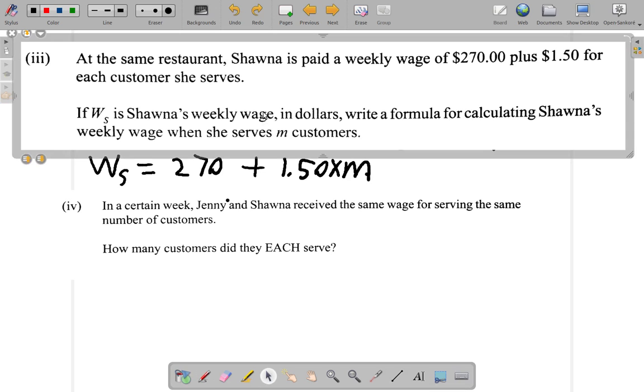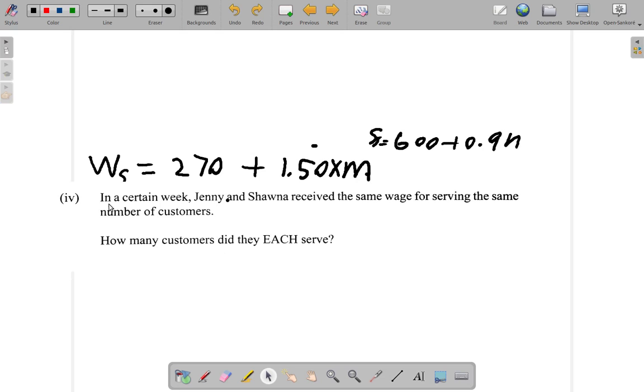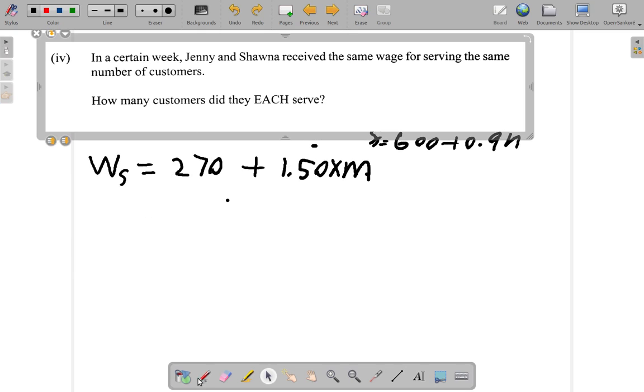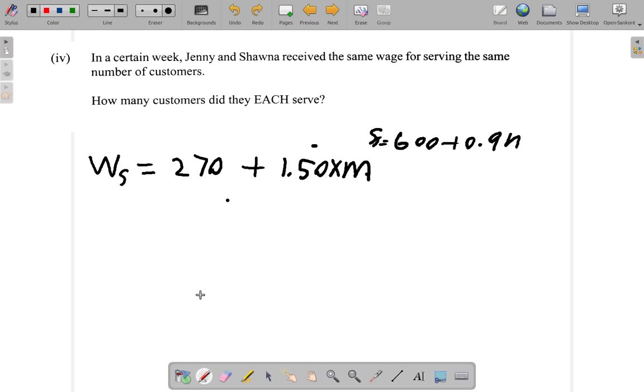Let me move this up here to make more space for the working. It says here Jenny and Shawna receive the same wage for serving the same number of customers. Same wage, same number of customers.